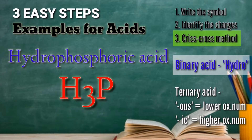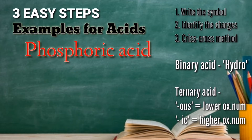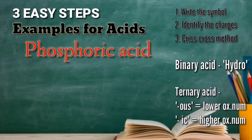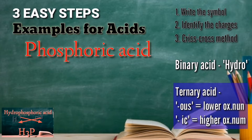So our formula for hydrophosphoric acid is H3P. For our next example, we have phosphoric acid. As you can see, there is no word 'hydro' in it, therefore it is a ternary acid. We are going to compare the difference between phosphoric acid and hydrophosphoric acid.